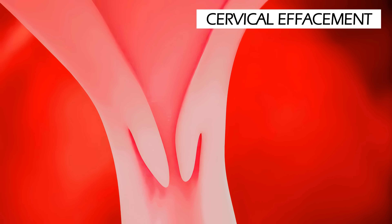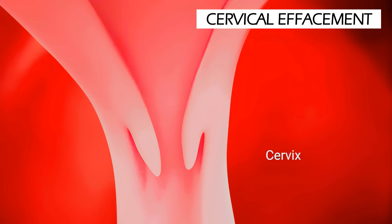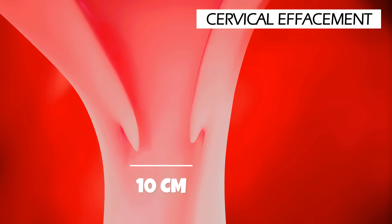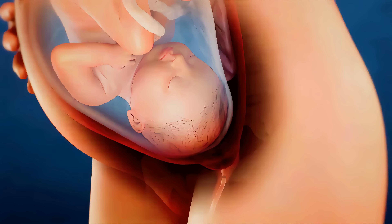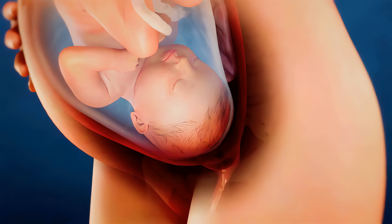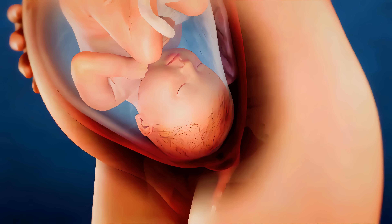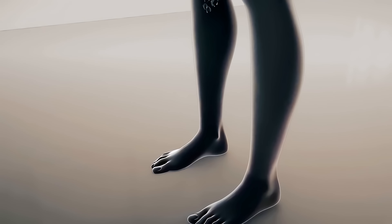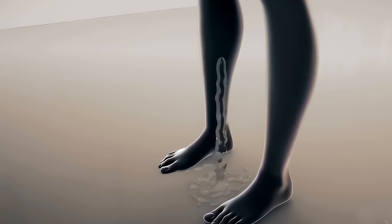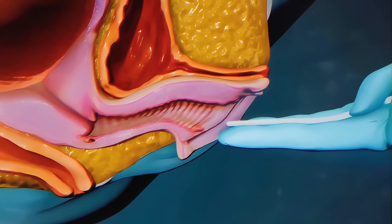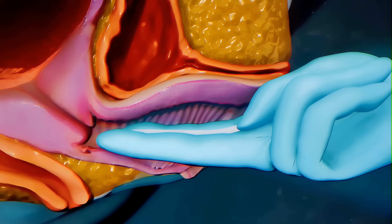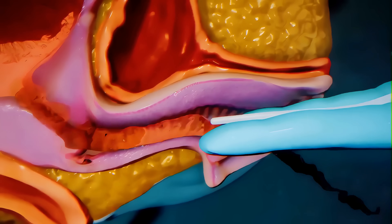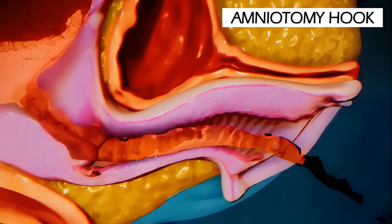True labor contractions lead to gradual dilation of the cervix, which continues to dilate to 10 centimeters. The amniotic sac rupture, or water breaking, can occur at different times during labor — it may rupture on its own, or if it hasn't ruptured naturally, the doctor may intentionally rupture it using an instrument called an amniotomy hook.